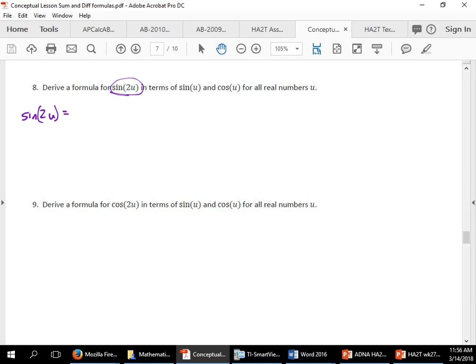I can rewrite this though. I can rewrite this as sine u plus u. Do you see where I'm going with that? Can you guys use the sum formula to write a more simple formula for sine 2u?